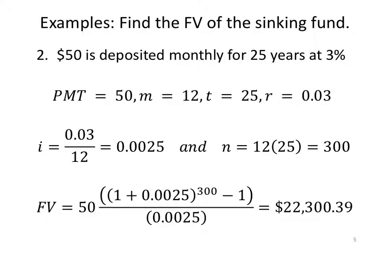Number two, find the future value of the sinking fund. $50 deposited monthly for 25 years at 3%. PMT is 50, monthly so m equals 12, t equals 25, interest rate 3% in decimal form is 0.03. Using these, we form i, which is r over m. N is monthly for 25 years, so that's 300 compounding periods.